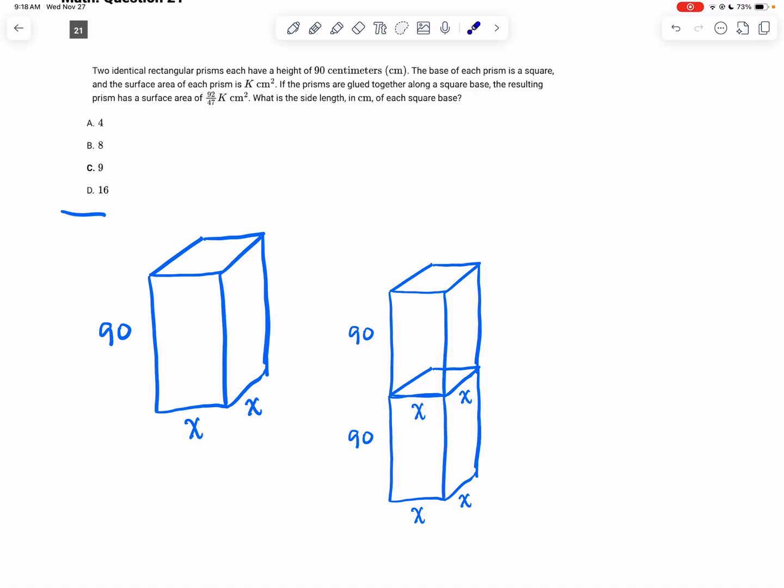When you do have the answers there, it's easiest to start with your middle numbers. If you tried 4 and it needs to be bigger, you'd have to then try 8, then 9, then 16. If you instead tried 9 or 8 and the answer had to be bigger or smaller, you'd have fewer options to go through and check.